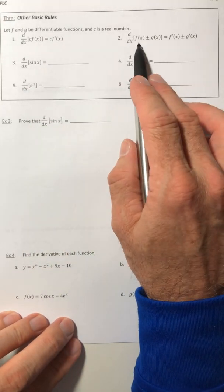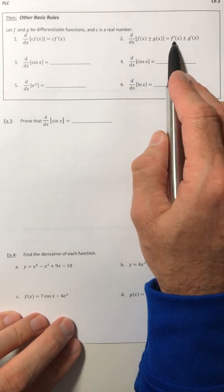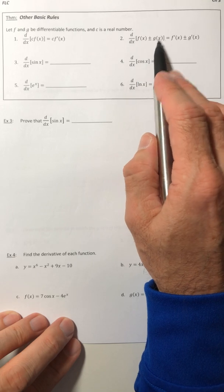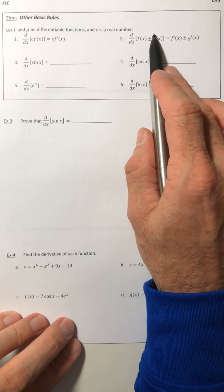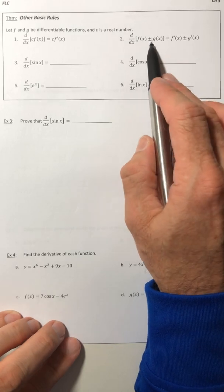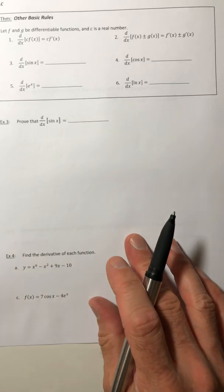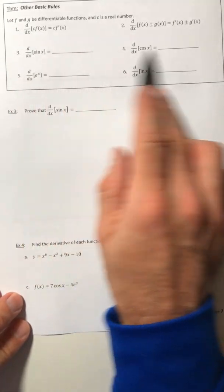Number two says that if you're adding or subtracting multiple functions together, then you can just do the derivative of each term and you keep the same operation in between. But it's only with addition and subtraction. Okay, so let's do these.